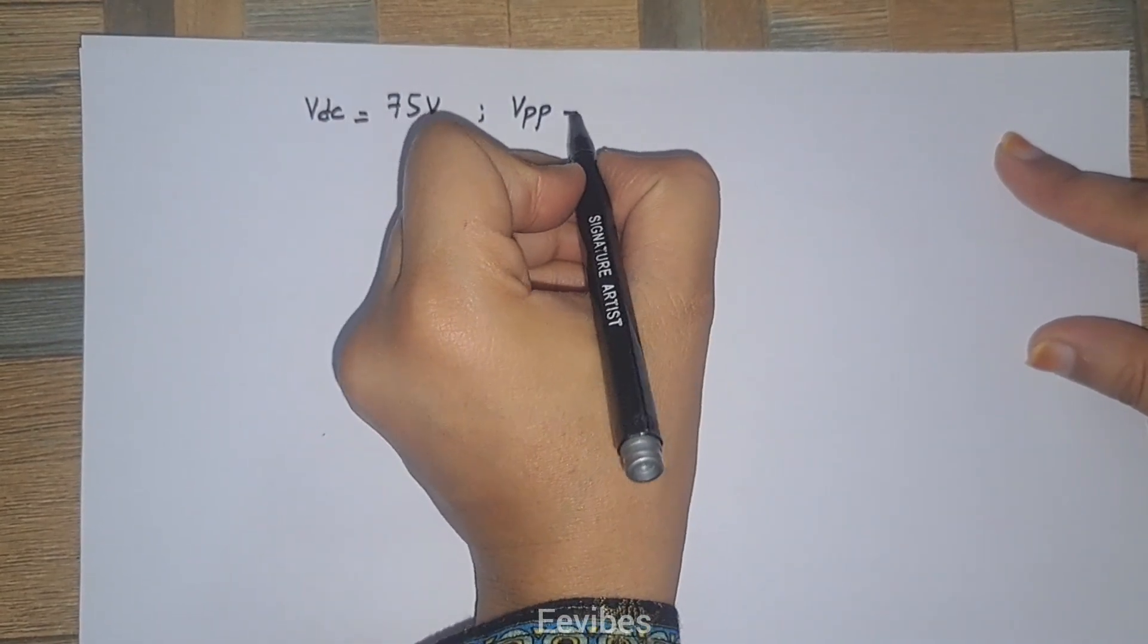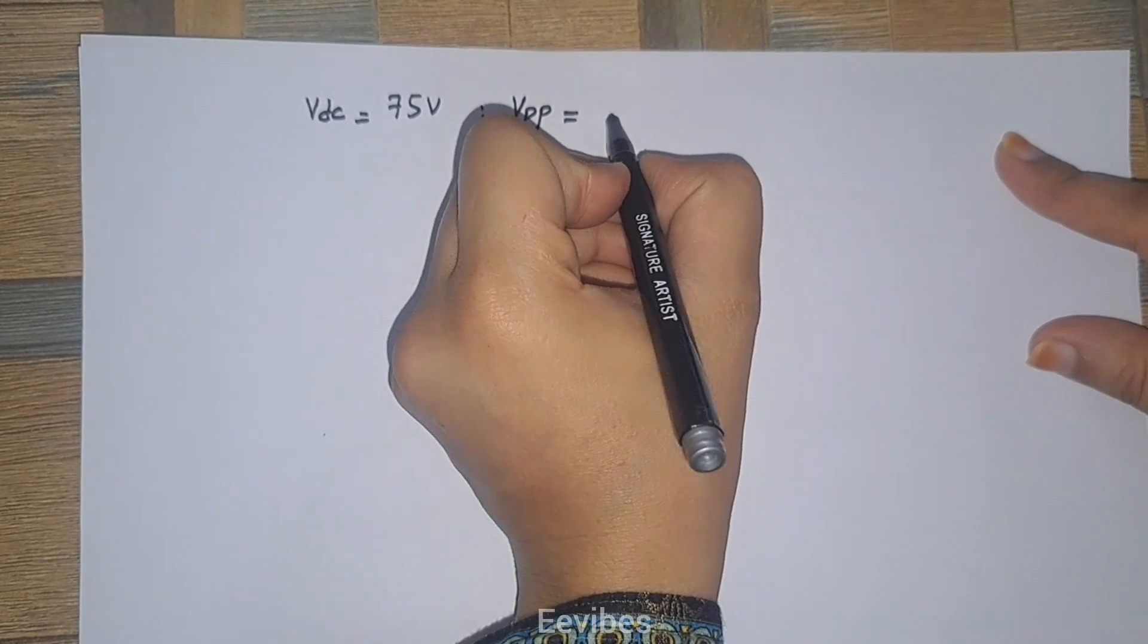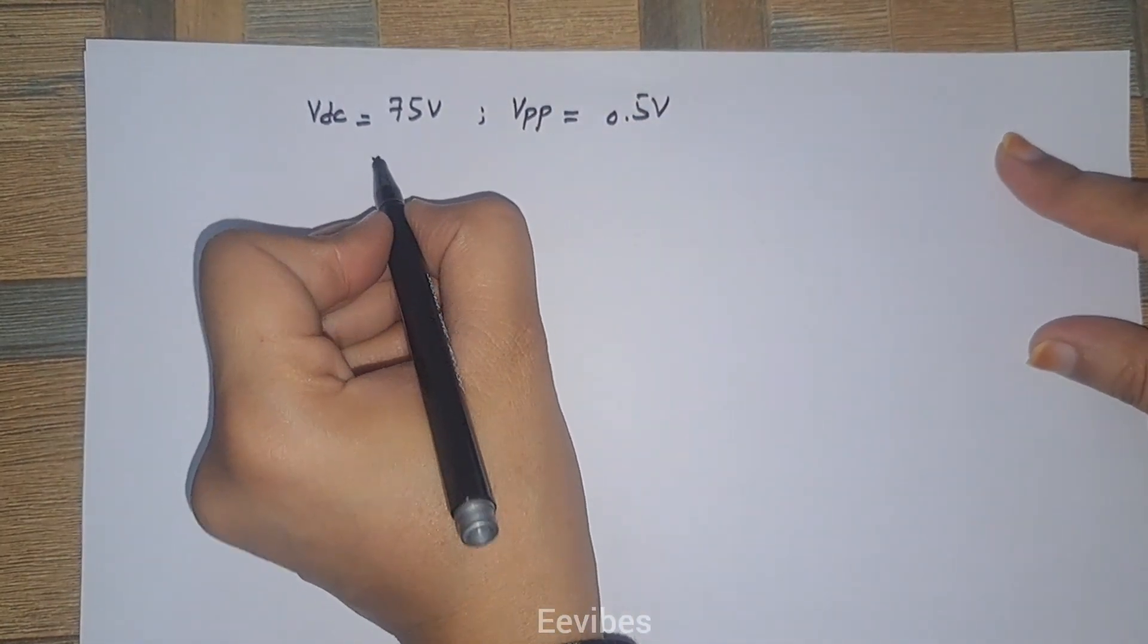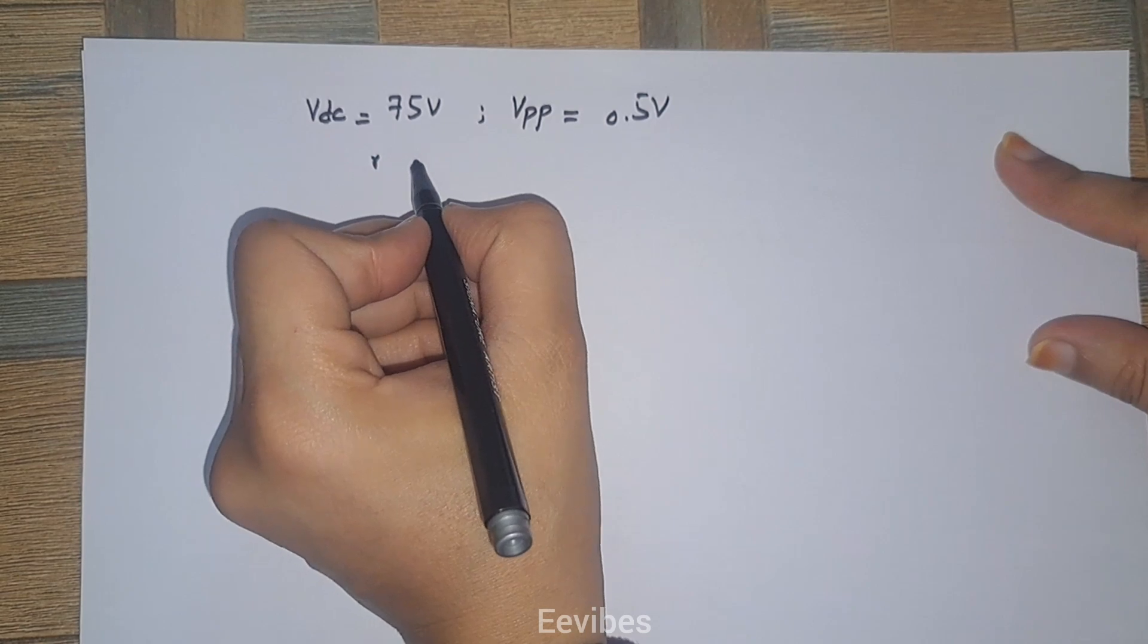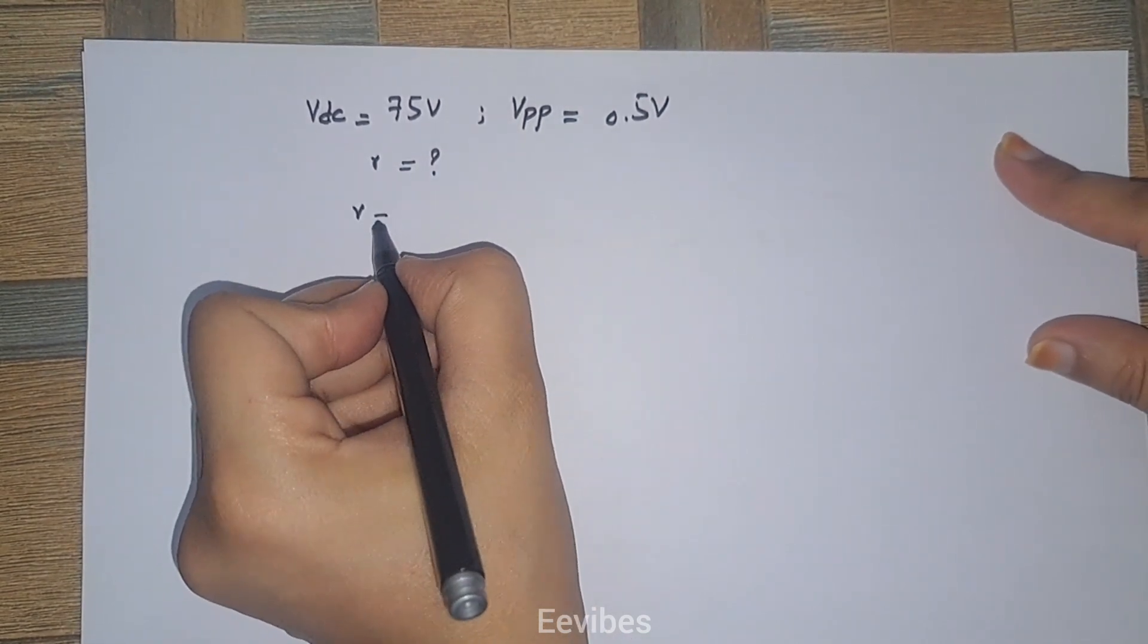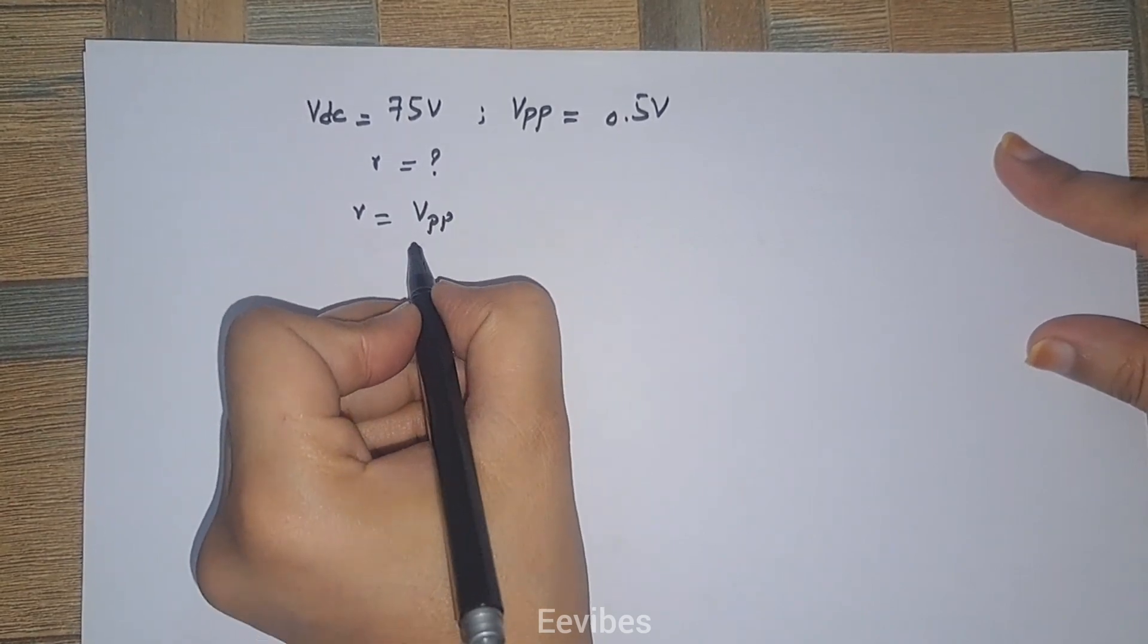equal to 0.5 volts. You have to calculate the ripple factor in percentage. The ripple factor is given as Vpp divided by VDC.